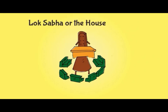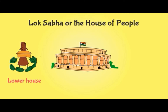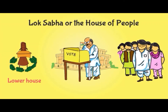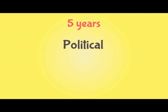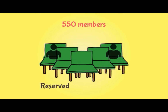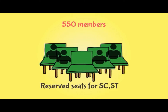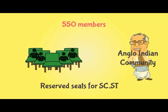The Lok Sabha, or the House of the People, is the lower house of the Parliament of India. It is called Lok Sabha because its members are directly elected by the vote of the people through a general election. It has a fixed duration of 5 years but can be dissolved due to any political, economic or social issue. Its maximum membership is 550, out of which some seats are reserved for scheduled castes and tribes. If the Anglo-Indian community is not adequately represented, the President can nominate two members from the community to Lok Sabha.